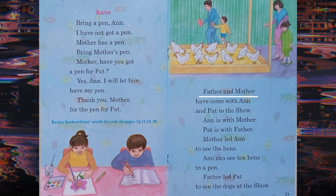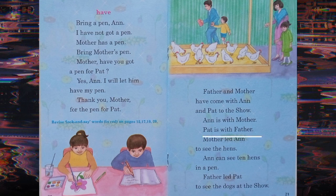Father and mother have come with Anne and Pat to the show. Anne is with mother. Pat is with father. Mother led Anne to see the hens. Anne can see ten hens in the pen.